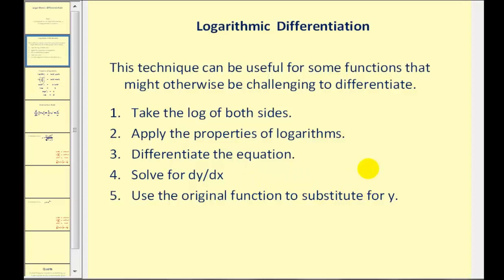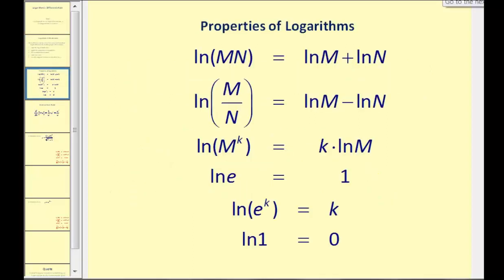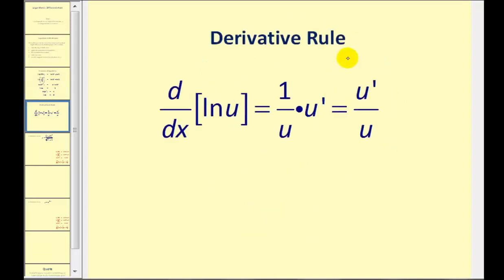Before we get started, let's review some of the properties of logarithms. These first three are going to be key: the product property of logs, the quotient property of logs, and the power property of logs. Notice we will be using natural logs. And one more thing to review: the derivative of natural log u is equal to one over u times u prime, which equals u prime divided by u.